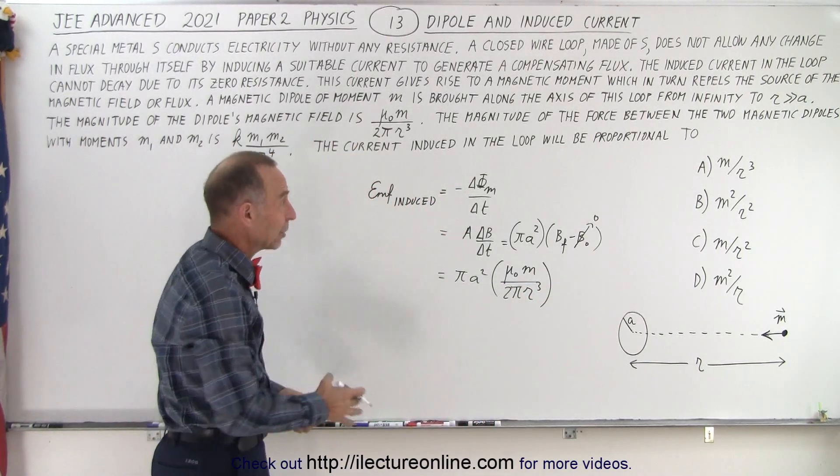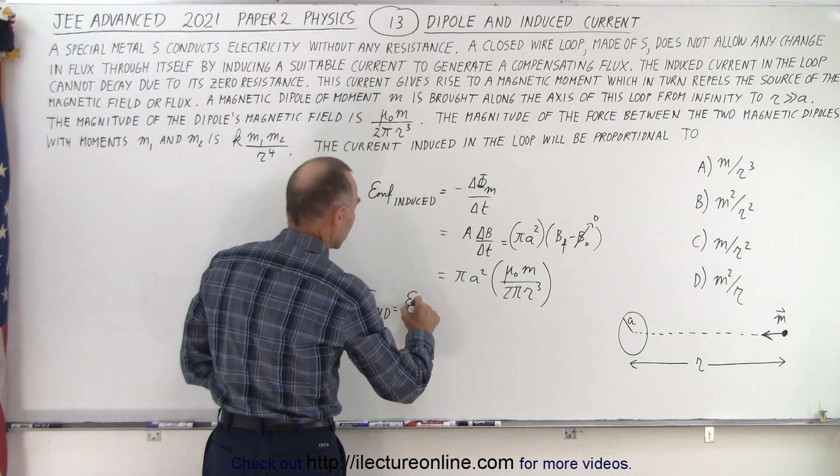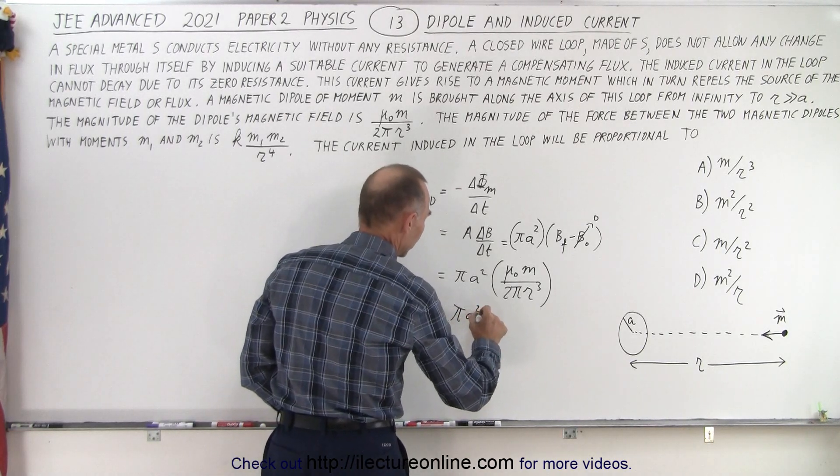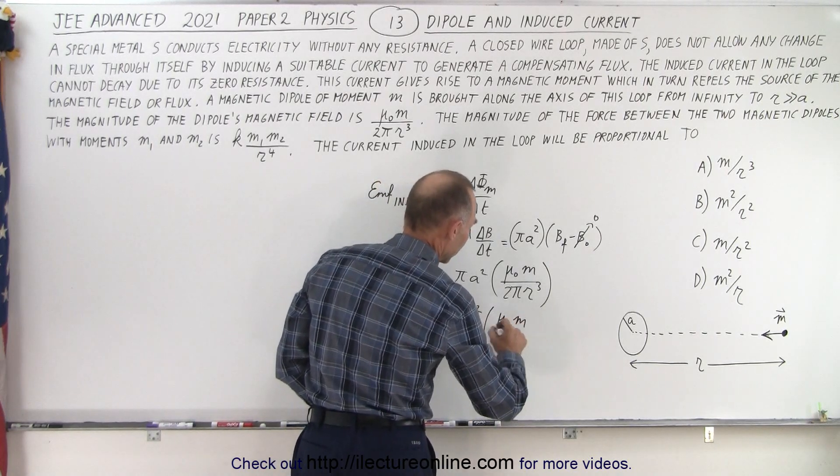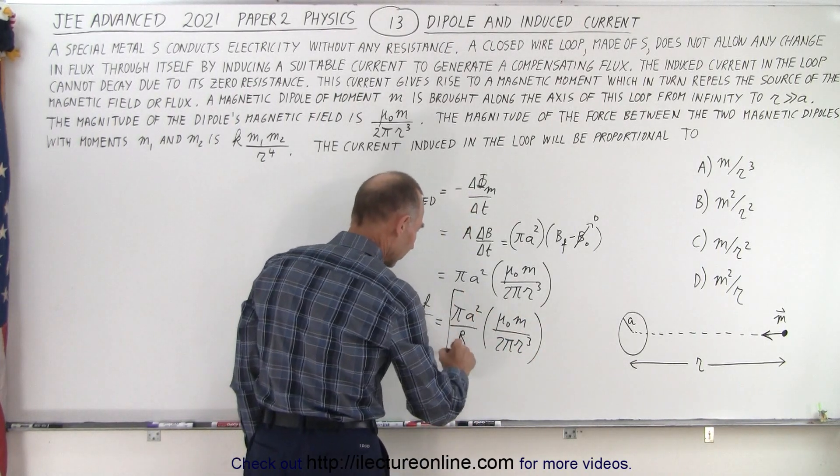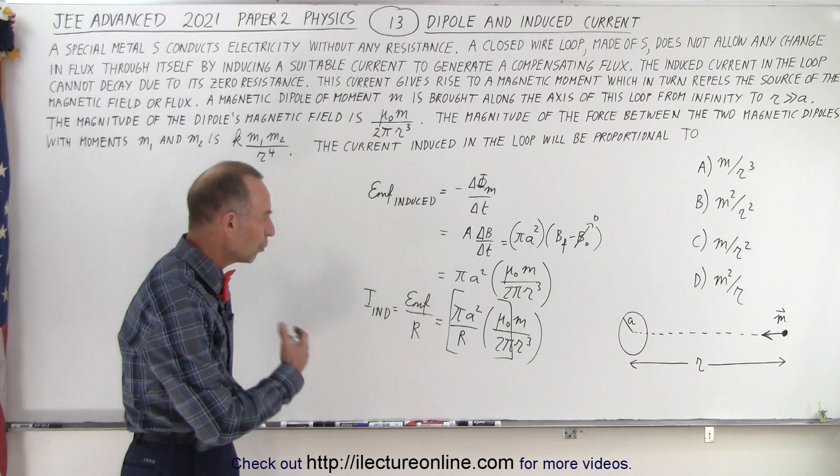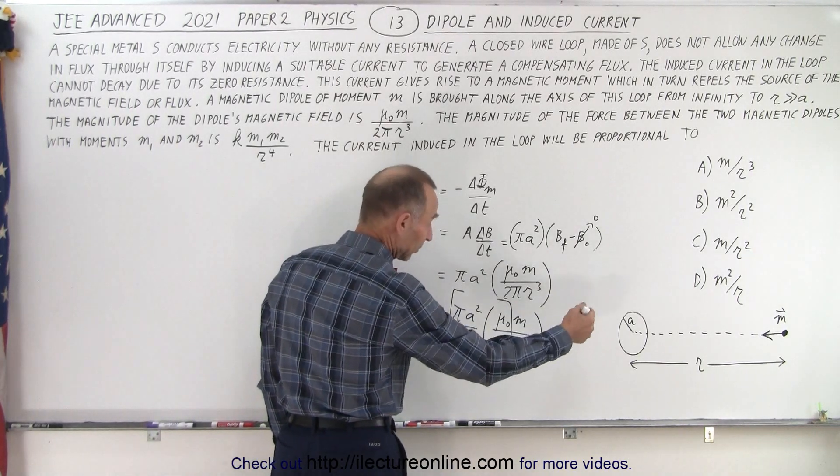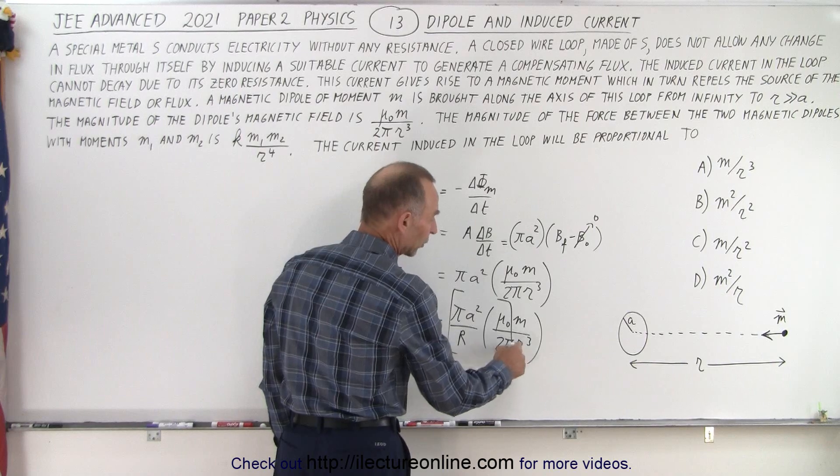And then, of course, we realize that the induced current, I induced, is simply going to be equal to the EMF induced divided by the resistance. So in this case, that's going to be πa² divided by the resistance times μ₀m divided by 2πr³. And notice that all of this is going to be constant. Pi, a, μ₀, 2π, all constant. And the only thing that is dependent on the circumstances, on the components used, is the magnetic dipole and the radius, which is now r³.